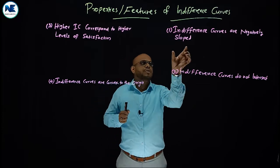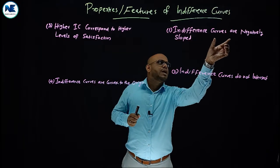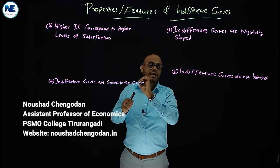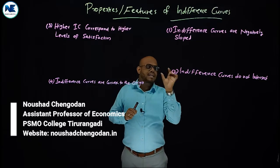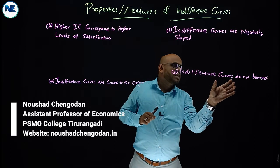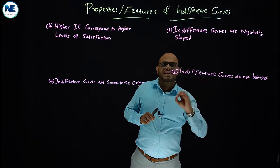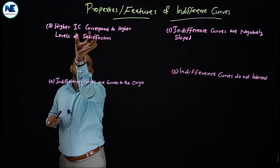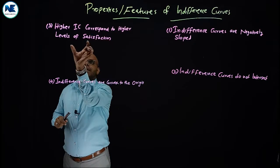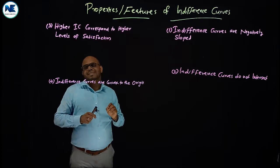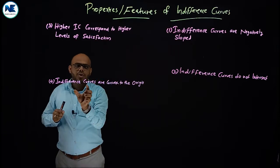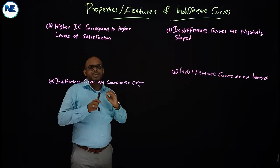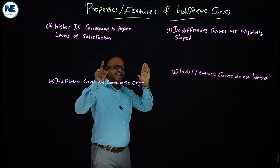The first property: indifference curves are negatively sloped. The second property: indifference curves do not intersect. The third property: a higher indifference curve corresponds to higher levels of satisfaction. The fourth property: indifference curves are convex to the origin.